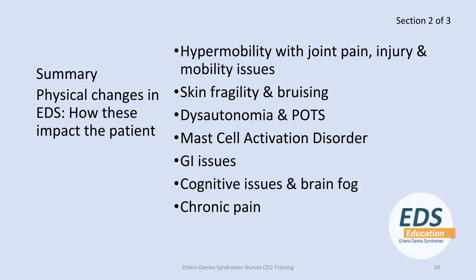Some of the physical changes you may see in a patient with EDS include hypermobility with accompanying joint pain, injury, sleep disturbance, and mobility issues. They may also have skin fragility, bruising, and sometimes bleeding disorders. They may present with dysautonomia, POTS, mast cell activation disorder, GI issues, cognitive issues and brain fog, and chronic pain. Thank you.